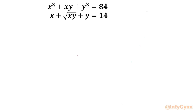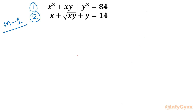Welcome to Infigyan friends. In this video we are going to take up one very interesting challenge from system of equations. We have two equations: the first one is x² + xy + y² = 84, and the second equation is x + √(xy) + y = 14. I will demonstrate two different methods to solve this problem, beginning with method number 1: the algebraic manipulation method.